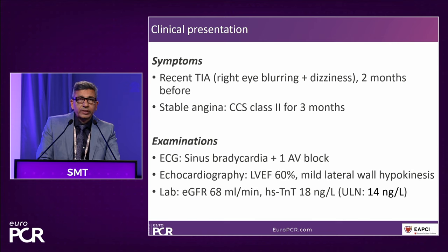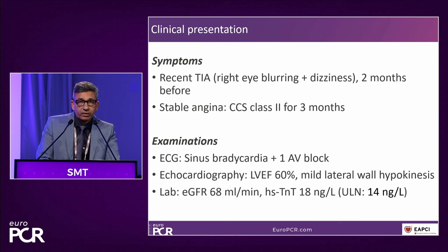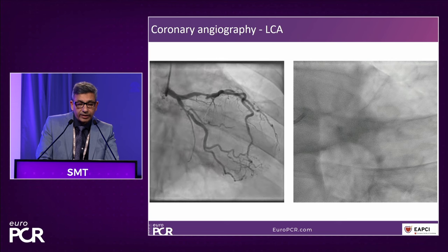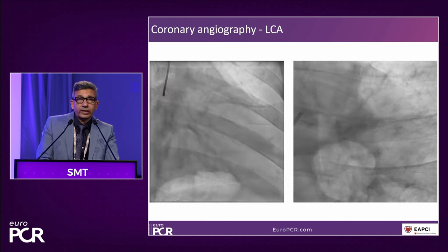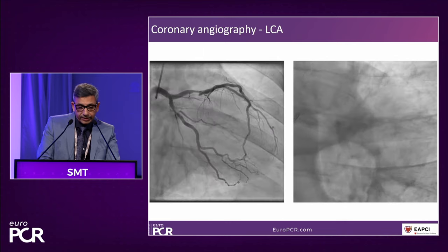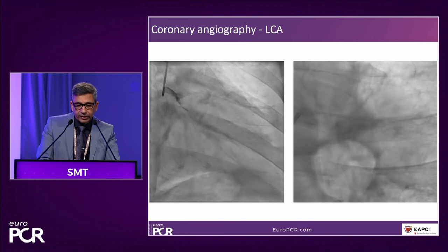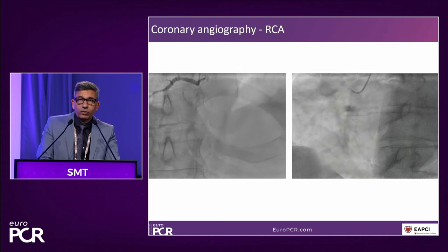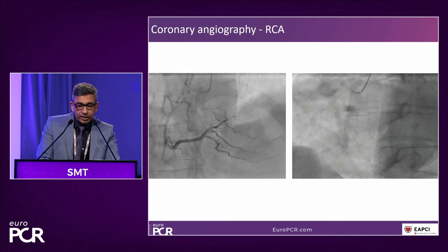The patient has a recent TIA with blurring of vision about two months ago, and stable class 2 angina for the last three months. Sinus bradycardia, no significant disease on ECG. Echocardiogram showed ejection fraction of 60% with mild lateral wall hypokinesis. eGFR of 68 ml per minute, and troponin slightly raised at 18. On angiography, there is a discrete focal lesion in the circumflex. In the LAD, this involves the proximal segment — segment 6 — involving a diagonal branch which is relatively small. The left main is normal, and the ostium of the circumflex and LAD are normal. The right coronary artery also has a focal lesion in the proximal segment with normal flow.